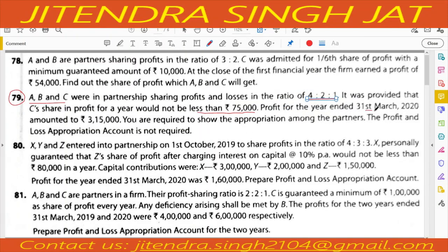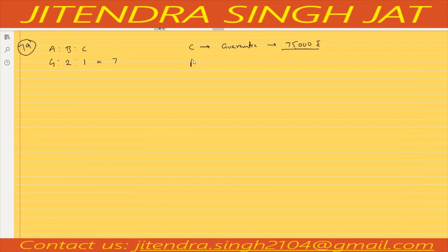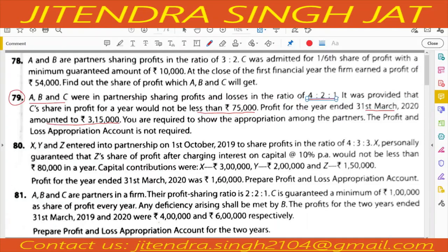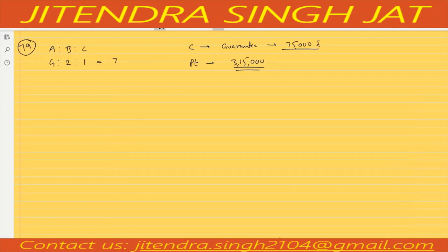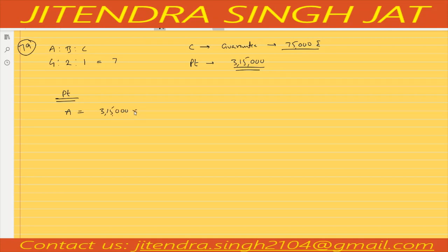Profit for the year ended 31st March 2020 amounted to 3 lakh 15,000. You are required to show the appropriation among the partners. The profit and loss appropriation account is not required; we can easily appropriate without preparing it. The ratio is 4 to 2 to 1.